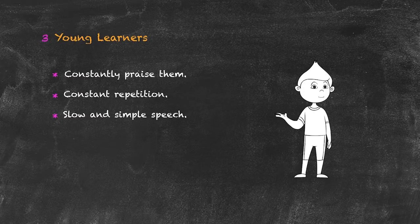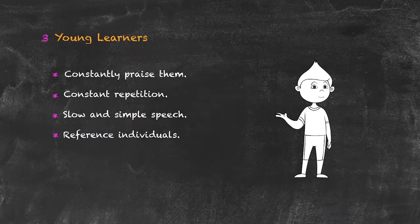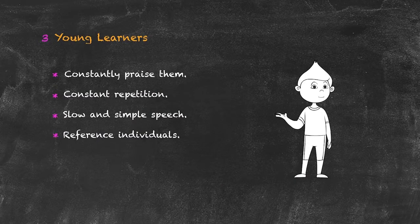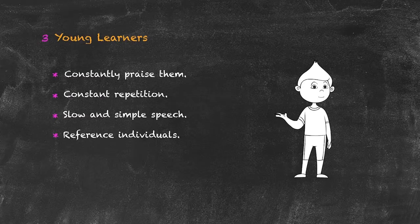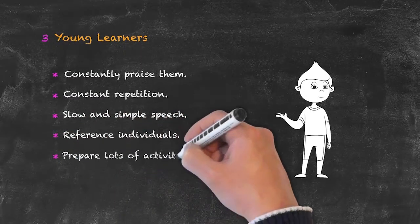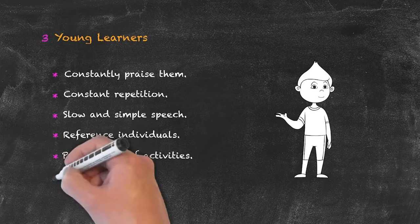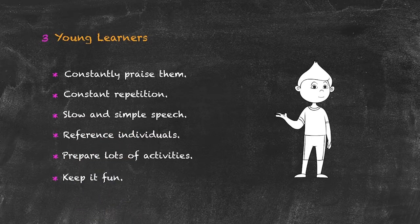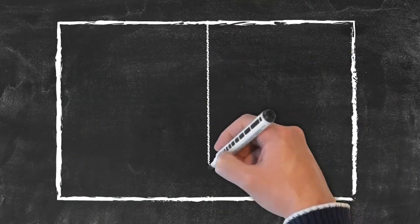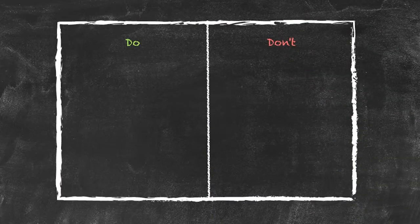Whenever possible, reference the individual rather than addressing the group as a whole when something has gone wrong. Be aware that young learners have a very short attention span, so prepare plenty of activities. Most importantly of all, keep it fun. Here are some general do's and don'ts for teaching young learners.